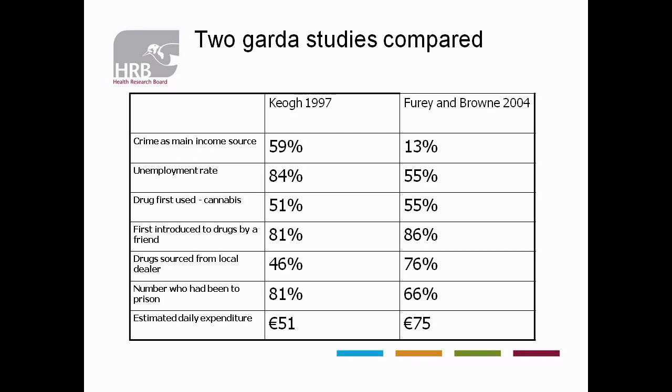The drug first used was cannabis, and that's been fairly consistent. First introduced to drugs by a friend — this is consistent at 81% and 86% — and that's consistent with all studies: people are first introduced to illicit drugs by somebody they know, a family member or a friend. Why that's important is that there is this perception of drug dealers as the stranger at the school gate, preying on people. Actually, most people are introduced to drugs by somebody that they know and somebody that is close to them. That must question our whole understanding of the drug dealing enterprise and how people actually become involved in drugs in the first place.